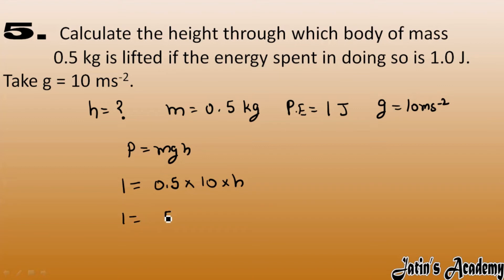So 1 equals 5 by 10 into 10 into height. Cancel it out. Here we got height value as 1 by 5 meter.